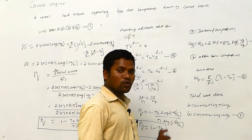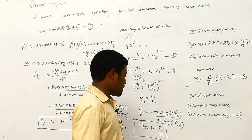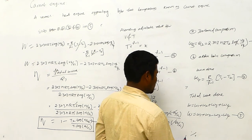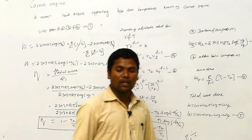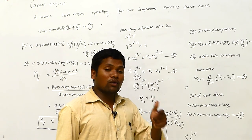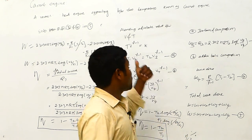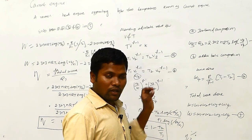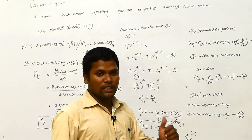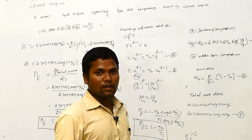In summary, the efficiency formula for the Carnot engine is η = 1 − T2/T1, where T1 is the source temperature and T2 is the sink temperature, both in Kelvin. In an exam, you may be asked to explain reversible and irreversible processes and derive the Carnot engine equation. For that, consider the PV diagram with curves AB, BC, CD, and DA, and you will arrive at η = 1 − T2/T1.